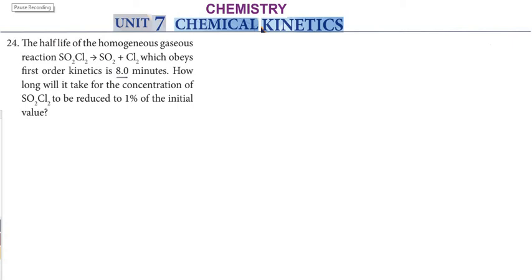Hi students, greetings from Success Education Academy. Chemistry unit 7: chemical kinetics. The half-life of a homogeneous gases reaction — sulfur chloride gives sulfur dioxide plus chlorine — which obeys first-order kinetics is 8 minutes. How long will it take for the concentration of sulfur chloride to be reduced to one percent of the initial value?